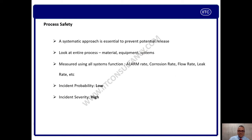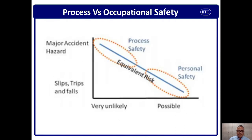In terms of probability, process safety events are very low, but the severity is very high. When I say severity is very high, that means it can kill many people at one point in time. Anybody and everybody within the zone of high fire, high radiation, or high exposure will be affected and may be killed. Severity is high in terms of fatality, production loss, and financial loss.